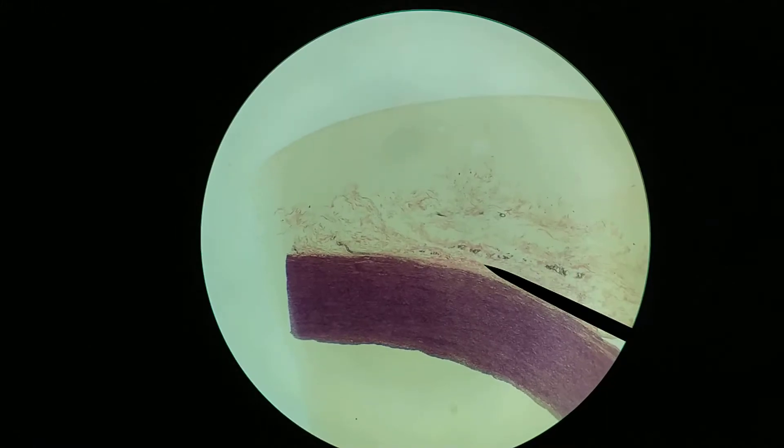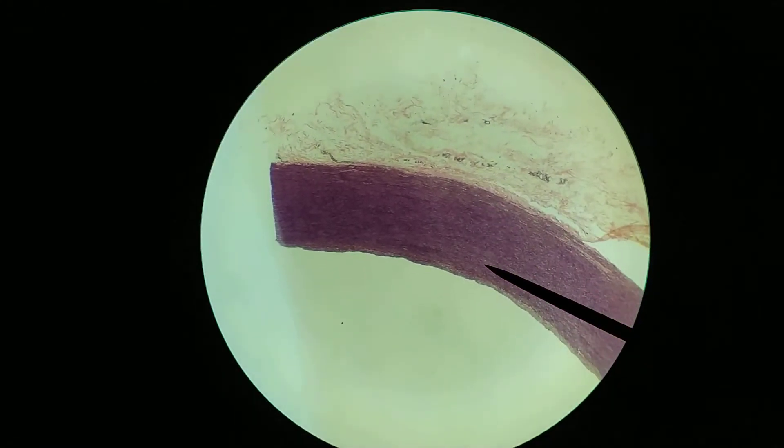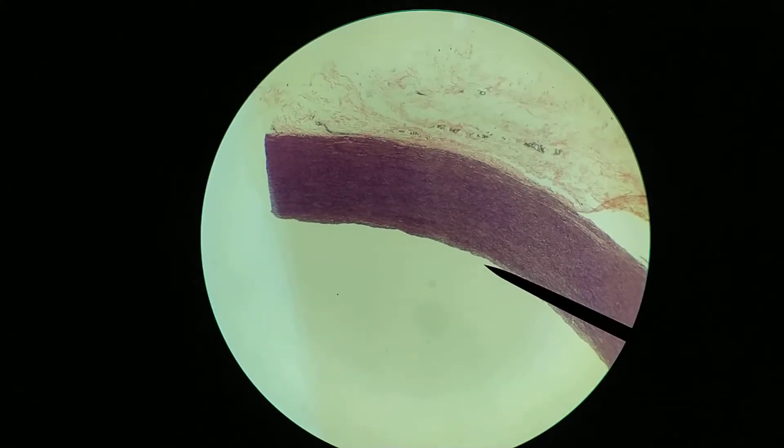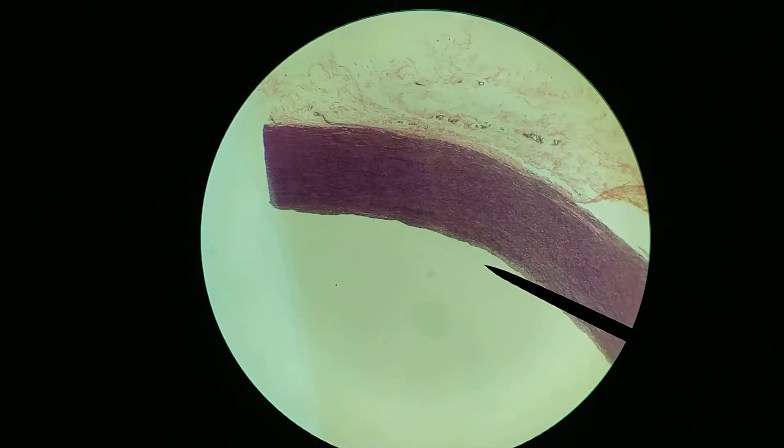So again, tunica adventitia out here, tunica media, and then the tunica intima is the innermost layer here. So we've looked at this and got the overall organization at low magnification. This is 100x.